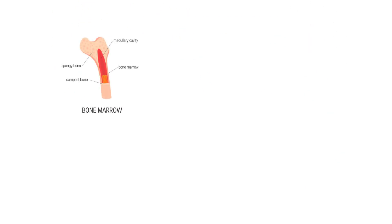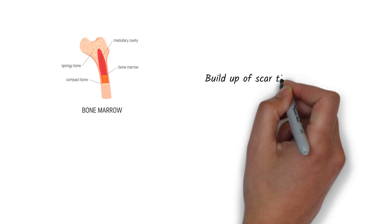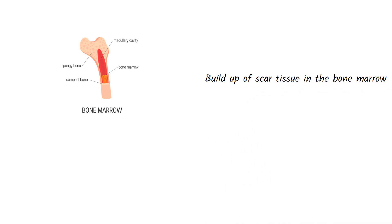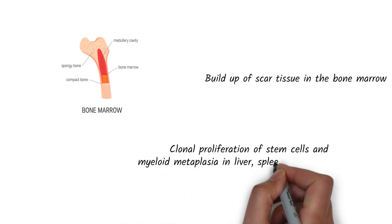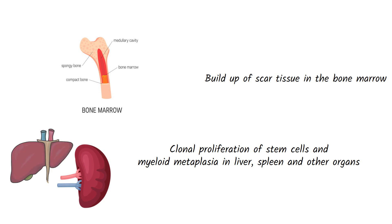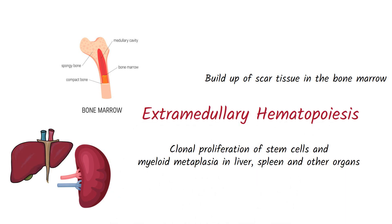Myelofibrosis is a condition characterized by a buildup of scar tissue in the bone marrow, so your bone marrow will not be able to produce blood cells. Therefore, there will be a clonal proliferation of stem cells and myelometaplasia in the liver, spleen, and other organs. We call this extramedullary hematopoiesis.